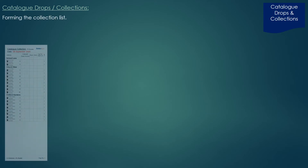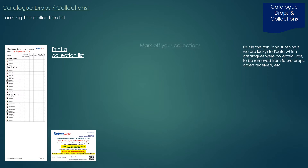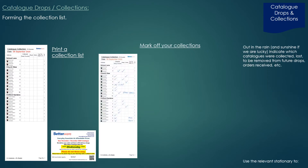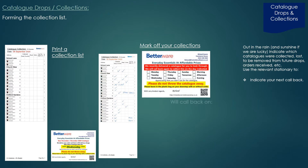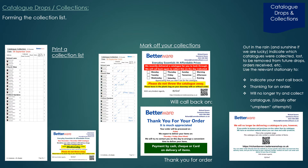Forming the collection list — we can print the collection list telling us which houses to go and collect from. Out in the sunshine or the rain, we indicate which houses we've collected from, which have read the catalogue, any that have lost it, and any we're going to call back to. We can indicate which day we're going to call back using our callback slips, put a card through to say thank you for your order, or if we've constantly tried to get the catalogue back with no success, put a card through saying we're no longer going to deliver.